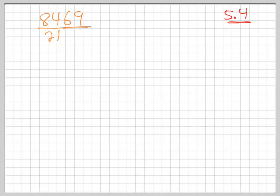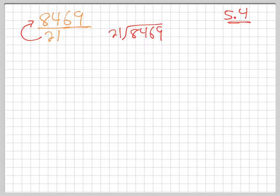So how do you divide just plain old numbers? Of course you'd use your calculator, but without a calculator, by hand. A fraction means division — specifically it means the bottom number into the top number. Just like 10 divided by 2 is 5 because 2 goes into 10 five times. So a fraction means long division. Bottom into top.